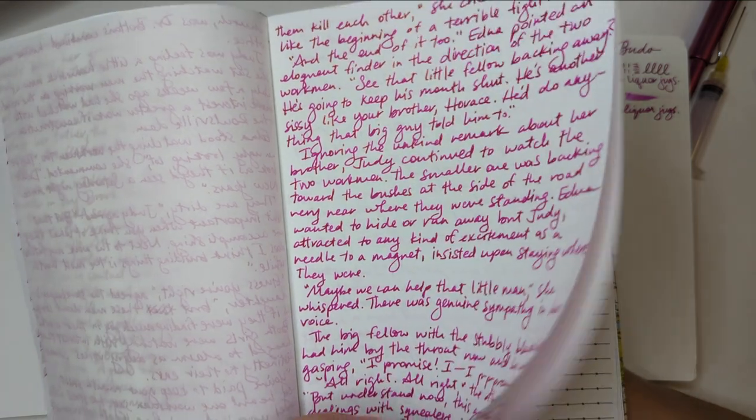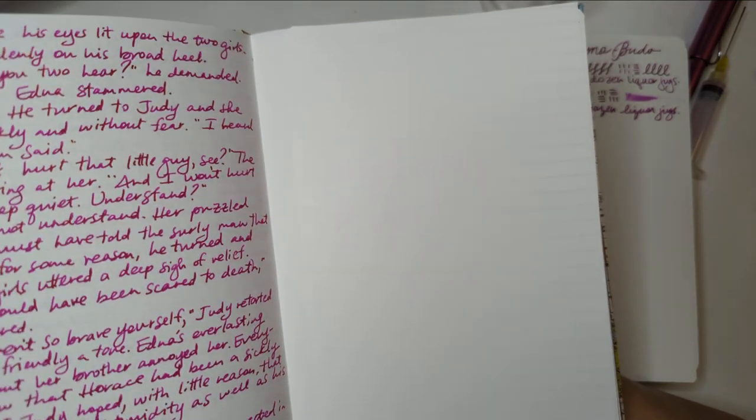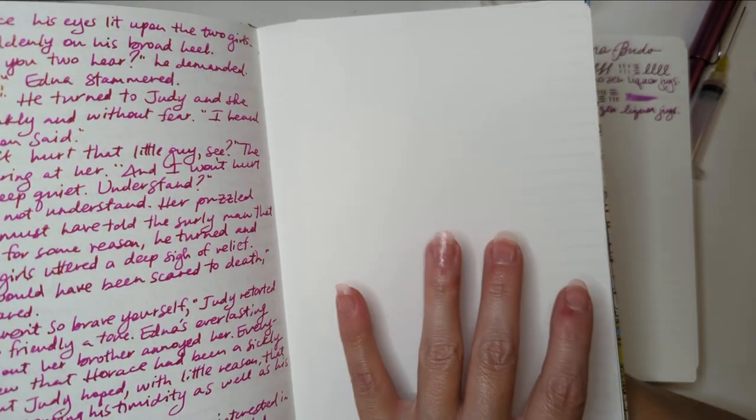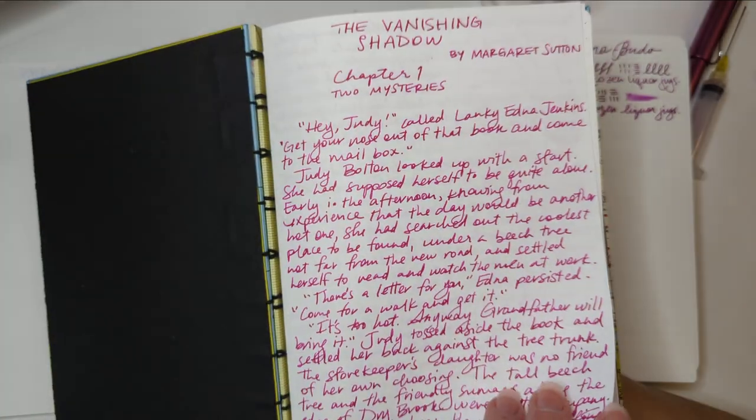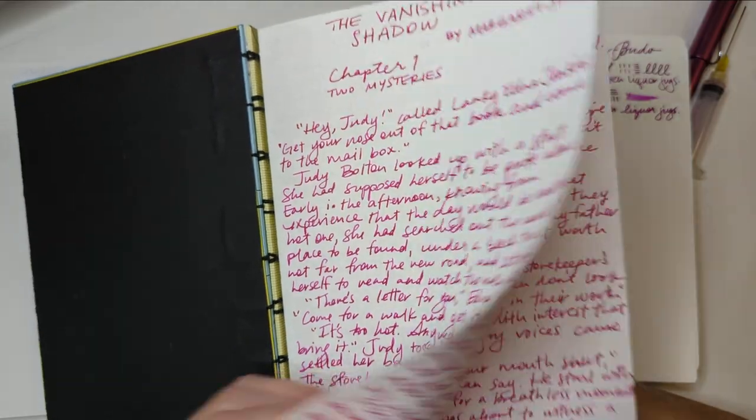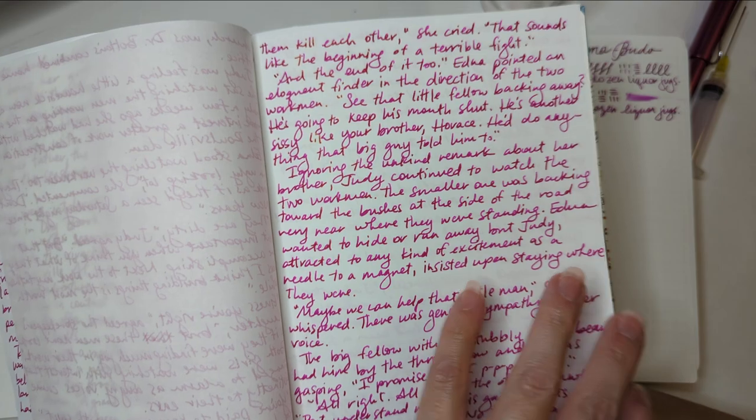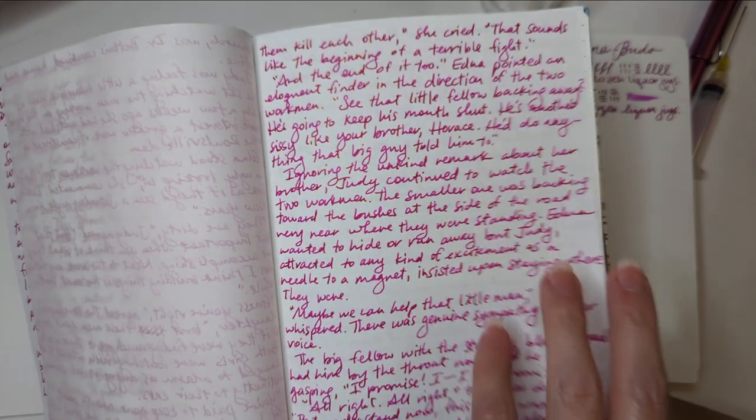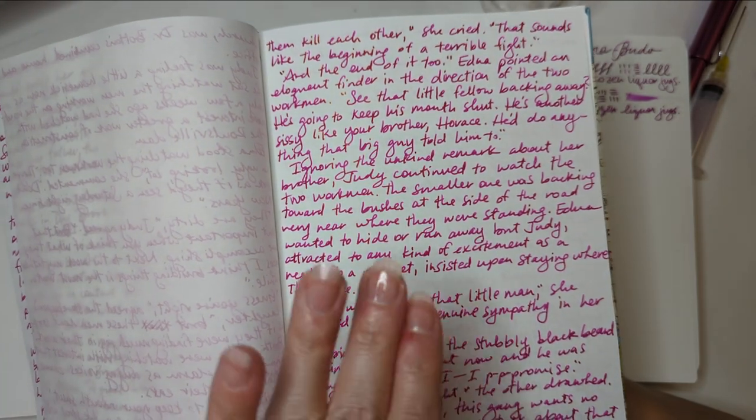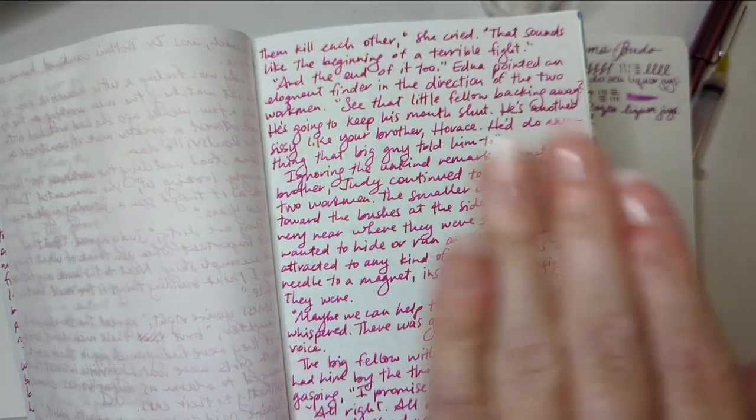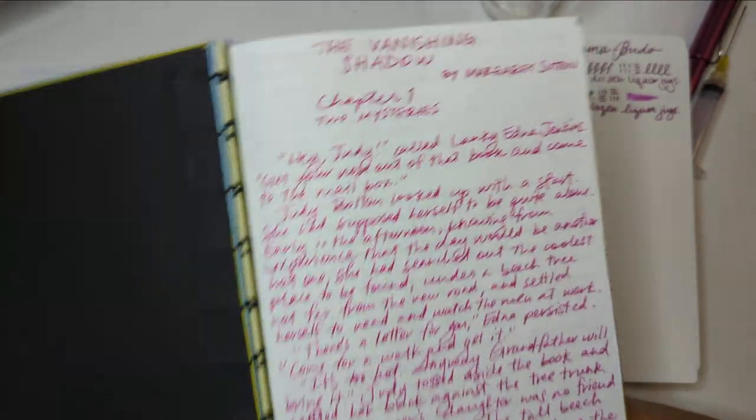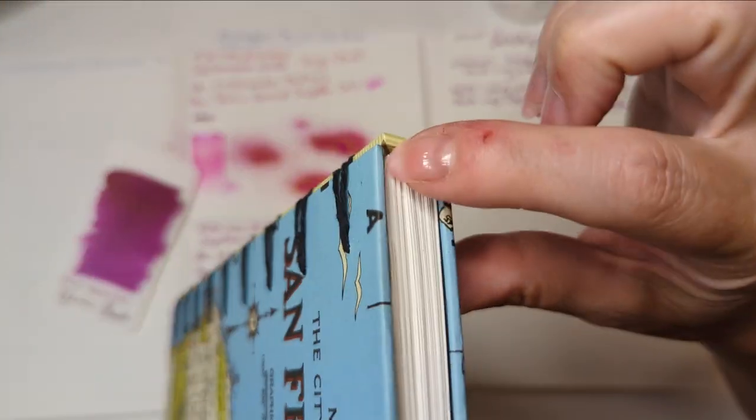So the way this book is made, it's gonna go like Tomoe, bank paper, Cosmo Air Snow. Then again, Tomoe, bank paper, Cosmo Air Snow. Then the reverse order: Cosmo Air Snow, bank paper, Tomoe, and repeat because they're folded.